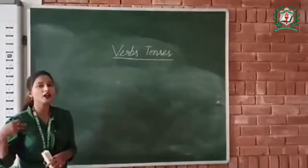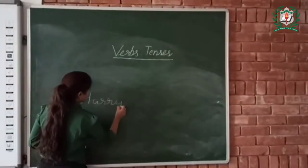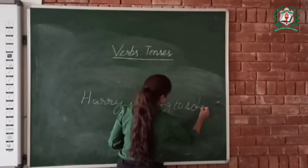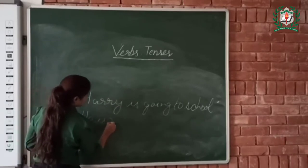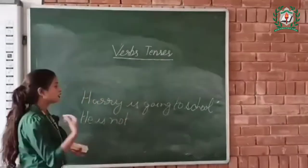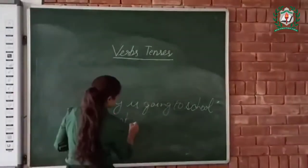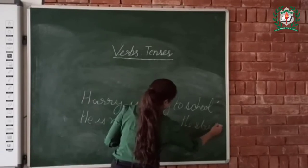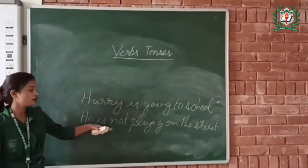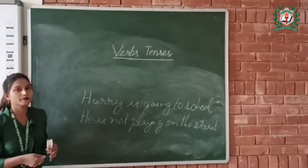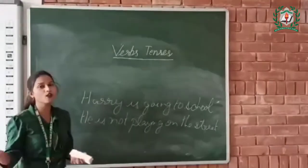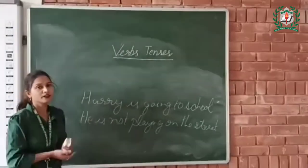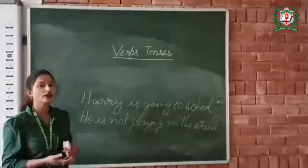Now let's see how to use not with the helping verb. Harry is going to school. He is not — we put not after the helping verb is — not playing on the street. So we use not after the helping verb is. The word not is used to show the opposite of an action. Harry is going to school; he is not playing on the street. This is how we use not with the helping verbs or auxiliary verbs.